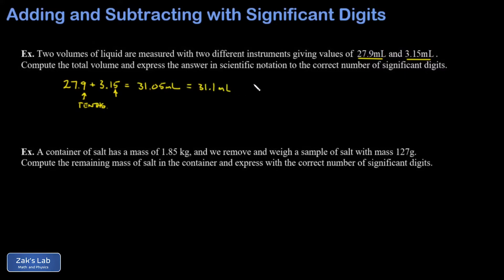And we've got the correct number of significant digits. But in this problem, we were asked to state the answer in scientific notation as well. So we'll move the decimal place one space to the left and write it as 3.11 times 10 to the first milliliters. And we're done with that one.